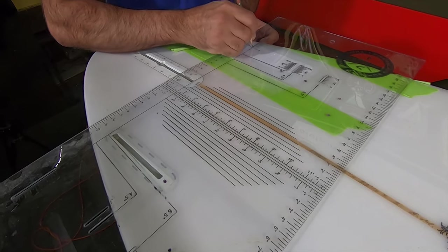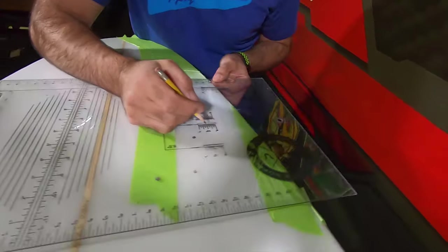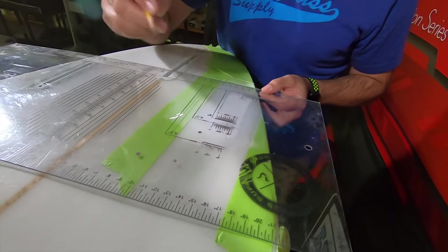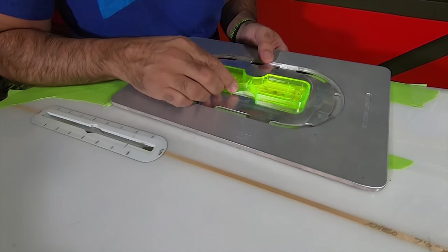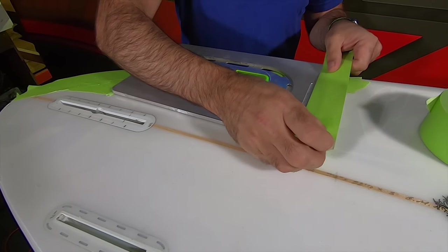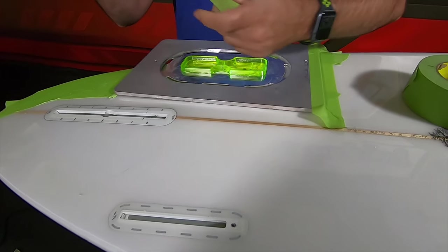Once you've got that sanded flat you need to mark where the fins are going to go. We check the other side and are just mirroring that fin placement over. We mark the rear spot of the fin and the front spot, and now we'll cut that out using the Futures one pass router jig.